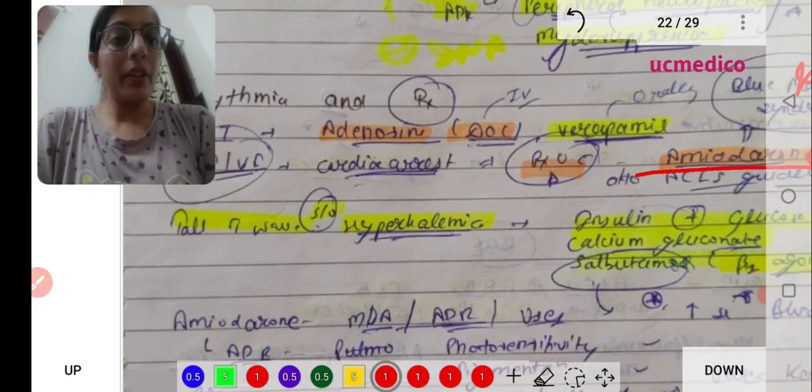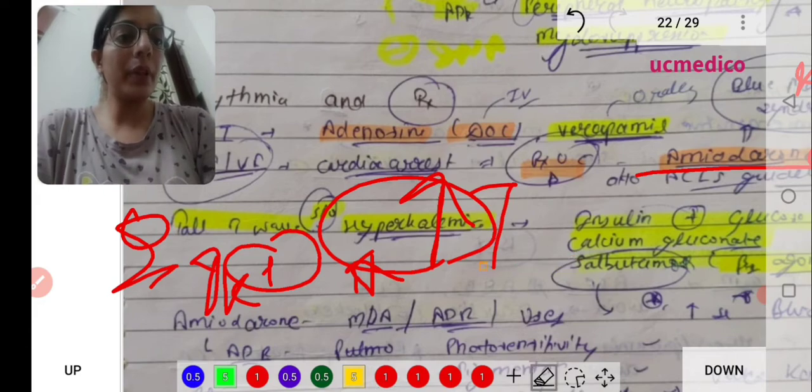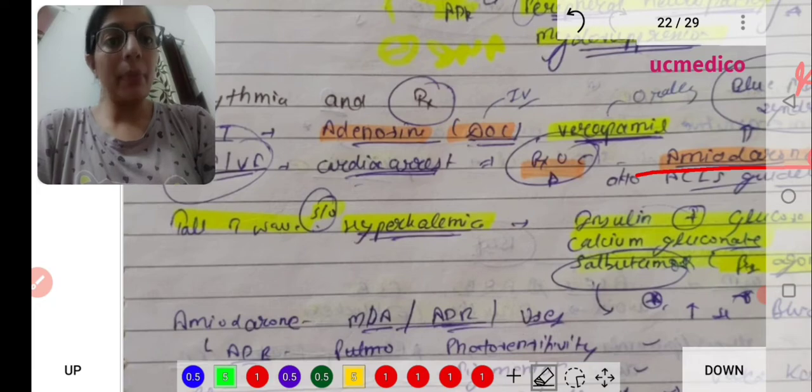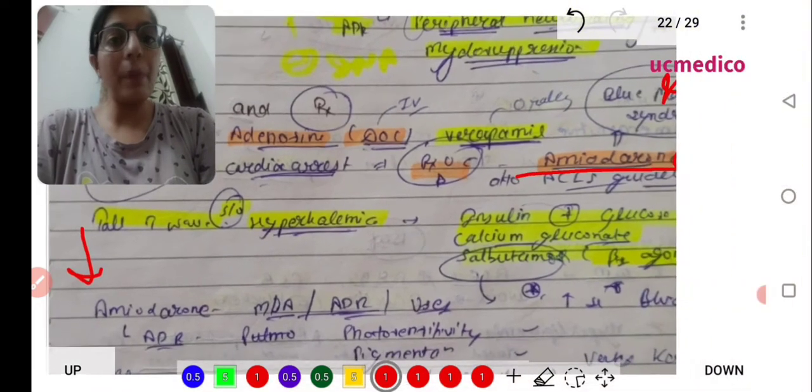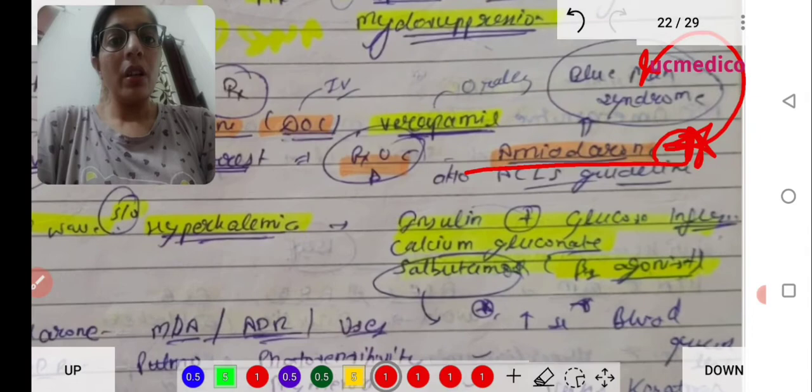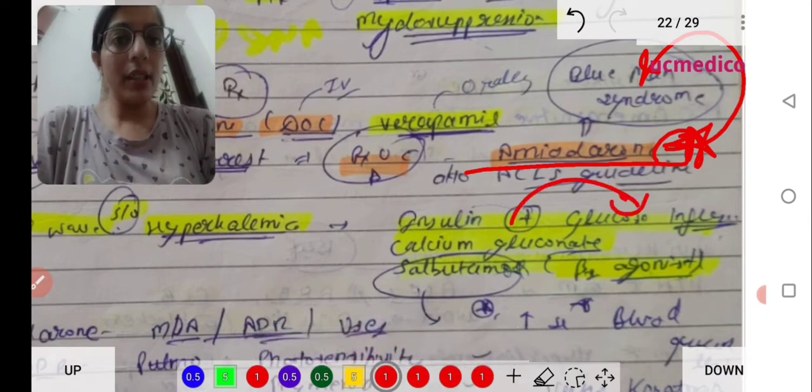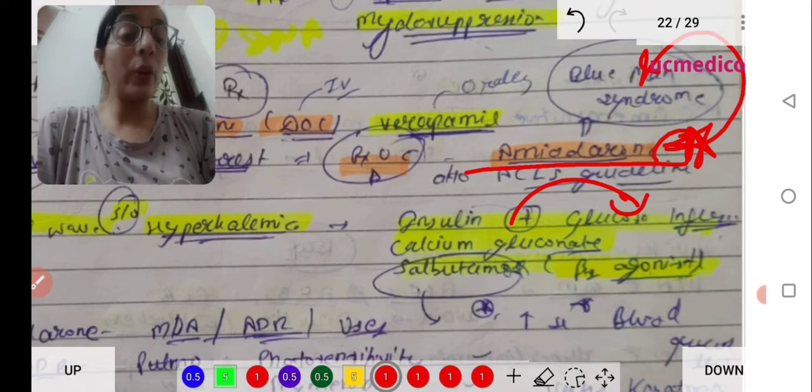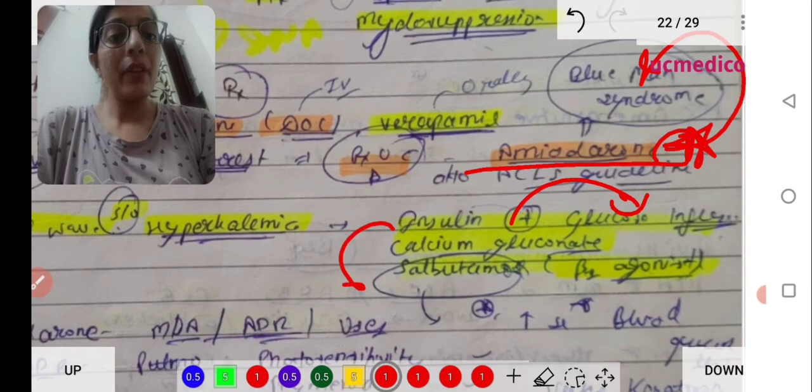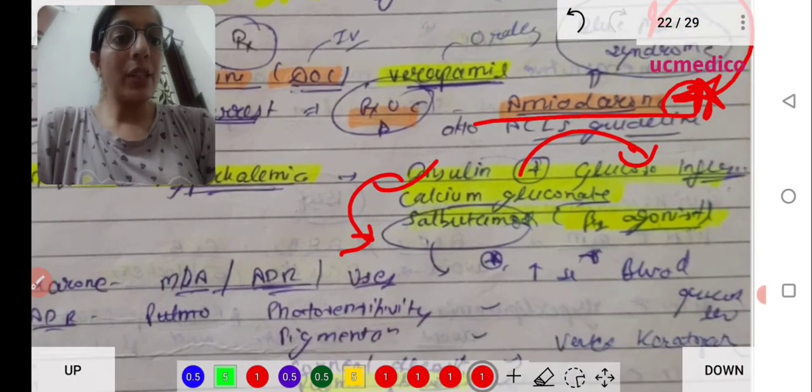This caution is important: tall T-wave is seen in hyperkalemia when potassium is excess. T-wave is big. In hypokalemia, there is depression of T-wave or absent T-wave. In hyperkalemia treatment, we can use insulin. We have to give glucose with insulin because it decreases glucose. Insulin helps in the movement of extracellular potassium to intracellular.